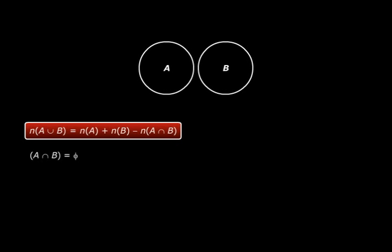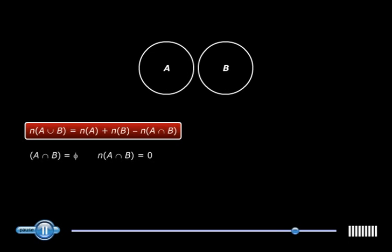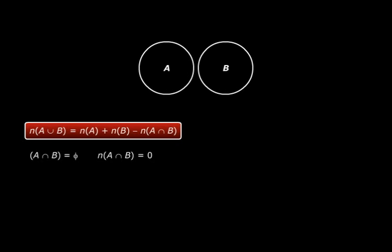And they look like this. In this case, n(A ∩ B) = 0. So we substitute the value of n(A ∩ B) in the formula. And what do we get? n(A ∪ B) = n(A) + n(B) - 0, or n(A ∪ B) = n(A) + n(B). So for two disjoint sets A and B, we have n(A ∪ B) = n(A) + n(B). This is the special case of the formula.